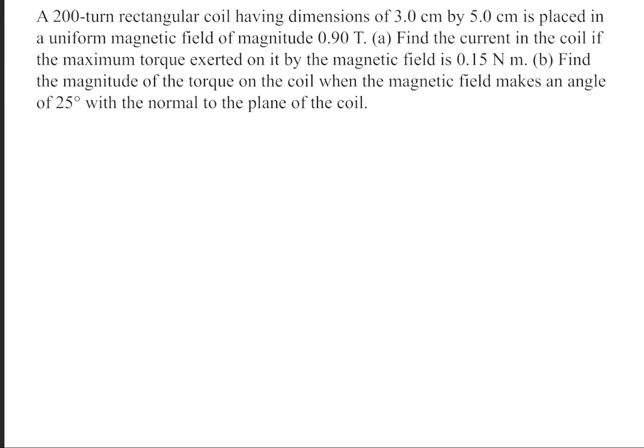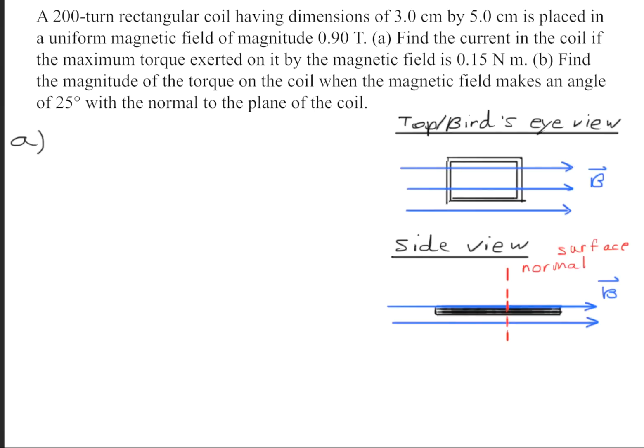To begin solving part A of this question, let's first construct a diagram of what's going on here. Right here we have this top or bird's eye view of what's happening. You have a rectangular coil inside of a magnetic field.